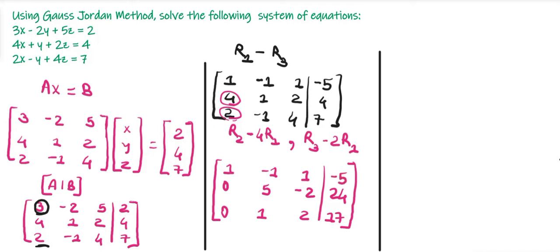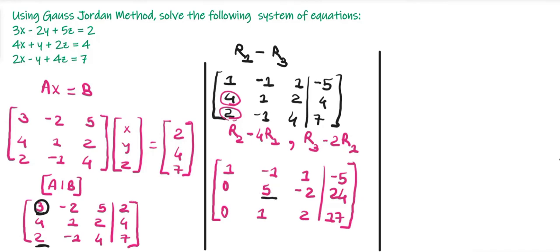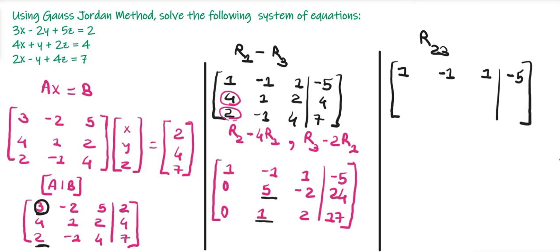Next we want to make the 5 in the second row become 1, and make the −1 and 1 in that column become 0. Since below the 5 in the third row we can see a 1, we perform a row interchange R2 ↔ R3. The second row becomes 0, 1, 2, 17 and the third row becomes 0, 5, −2, 24.